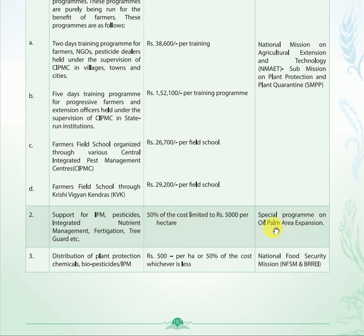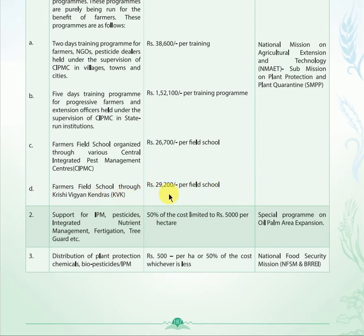Under the Special Program on Oil Palm Area Expansion, distribution of plant protection chemicals through IPM is ₹500 per hectare or 50 percent of the cost, whichever is less — under the National Food Security Mission. Note the 50 percent subsidy. The important value of ₹29,200 under KVK is very important and there may be a question on this.